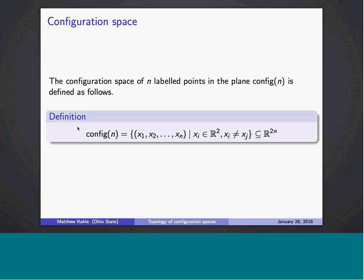We consider n points in the plane. This is the configuration space, which we'll denote config n — it's understood that it's n points in R². Each of x₁ through xₙ represents one point in the plane with two real coordinates. There's only one condition for the configuration space: the points are distinct. We don't allow two points to be on top of each other.